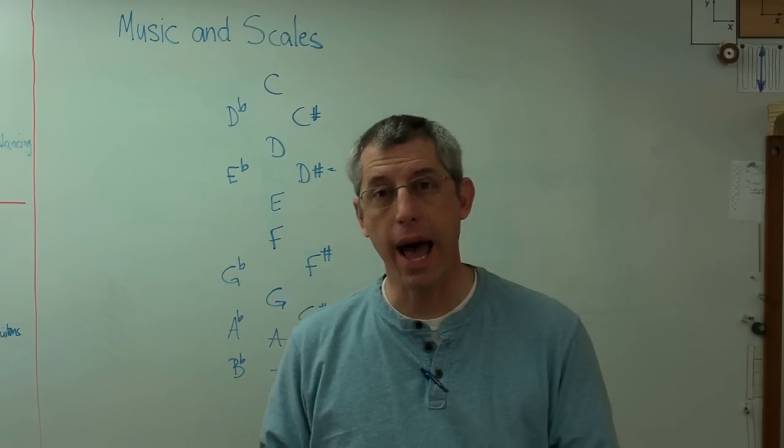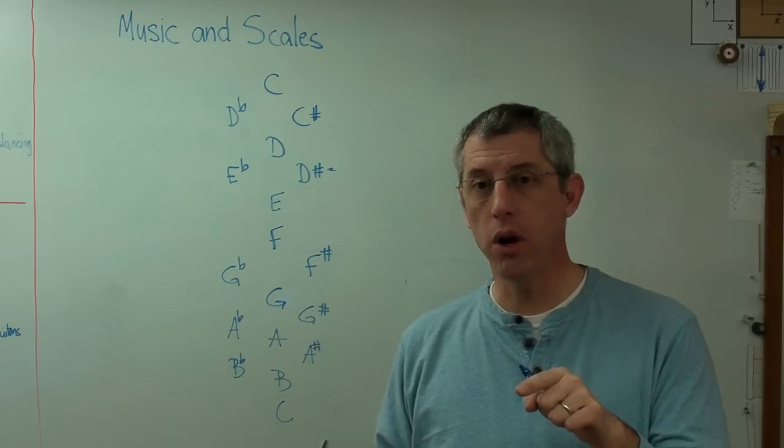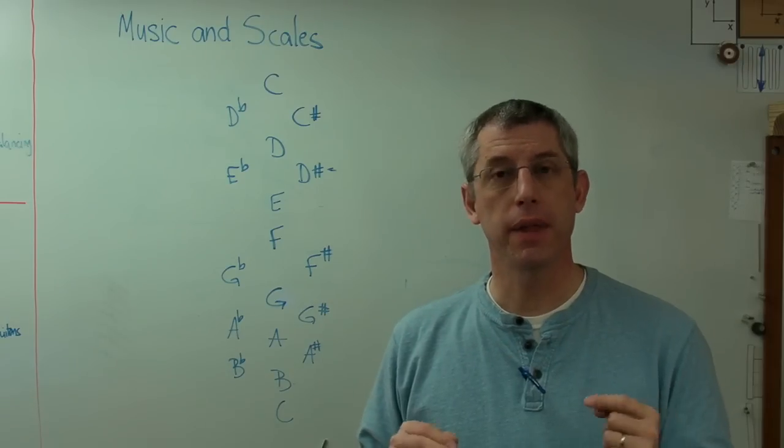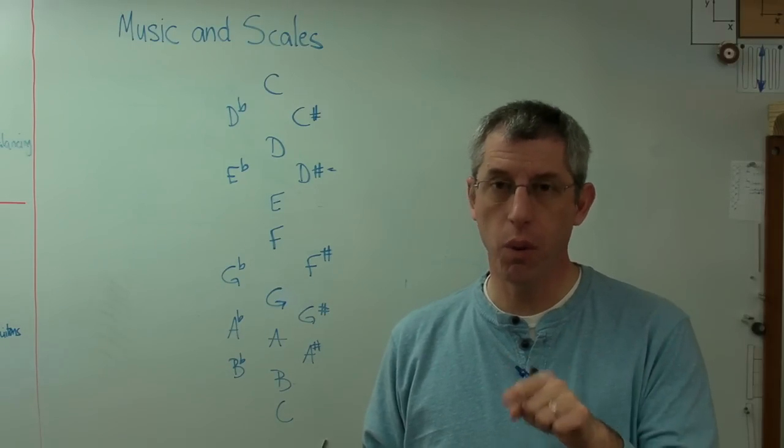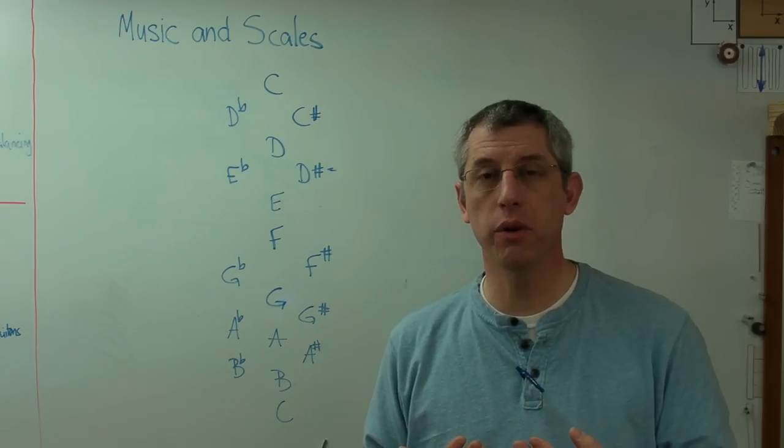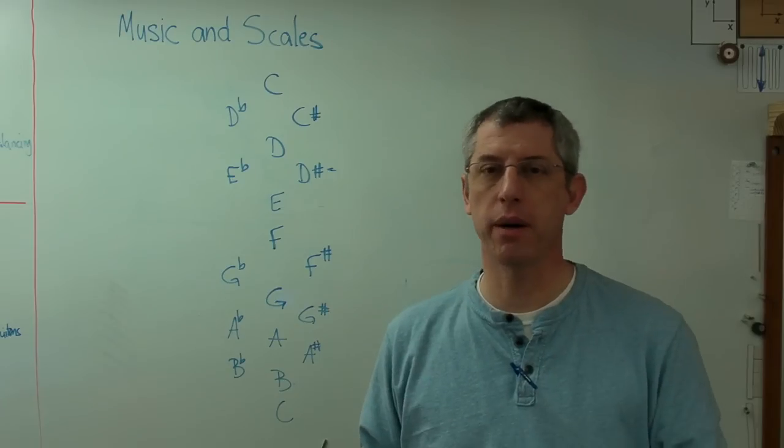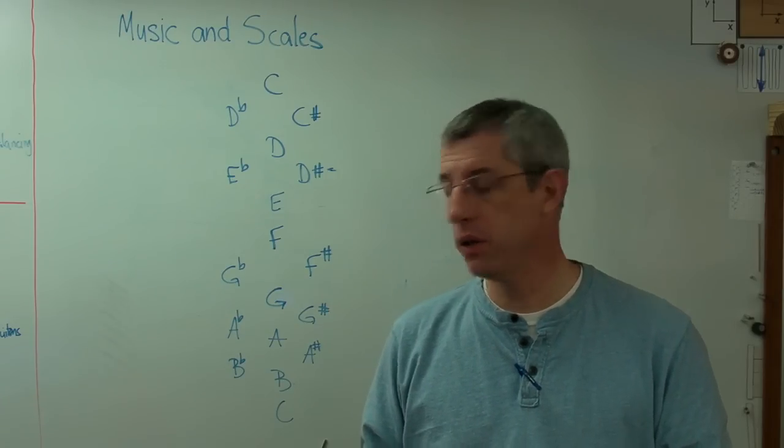Now, if you want to know what a half-step is, look at the keyboard on a piano. When you go from one note to the note right next to it, that's a half-step. So if you go from a white key to the black key right next to it, that's a half-step. And there's a ratio of those two frequencies, and that ratio is the 12th root of 2. If you want to know where that comes from, I've got a video posted on that, too.